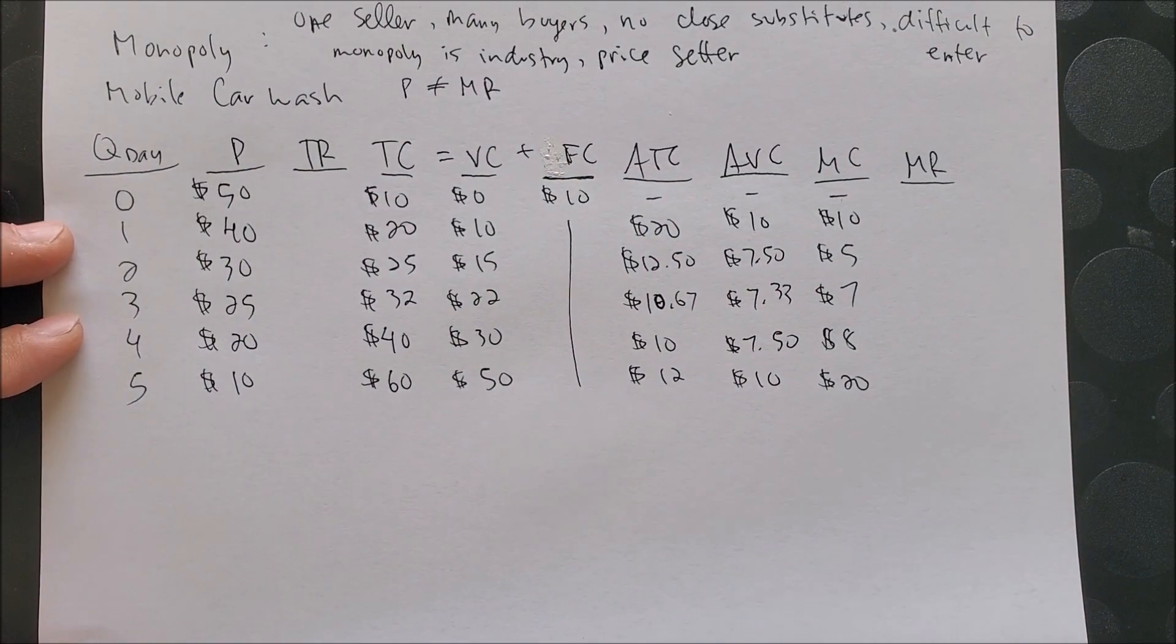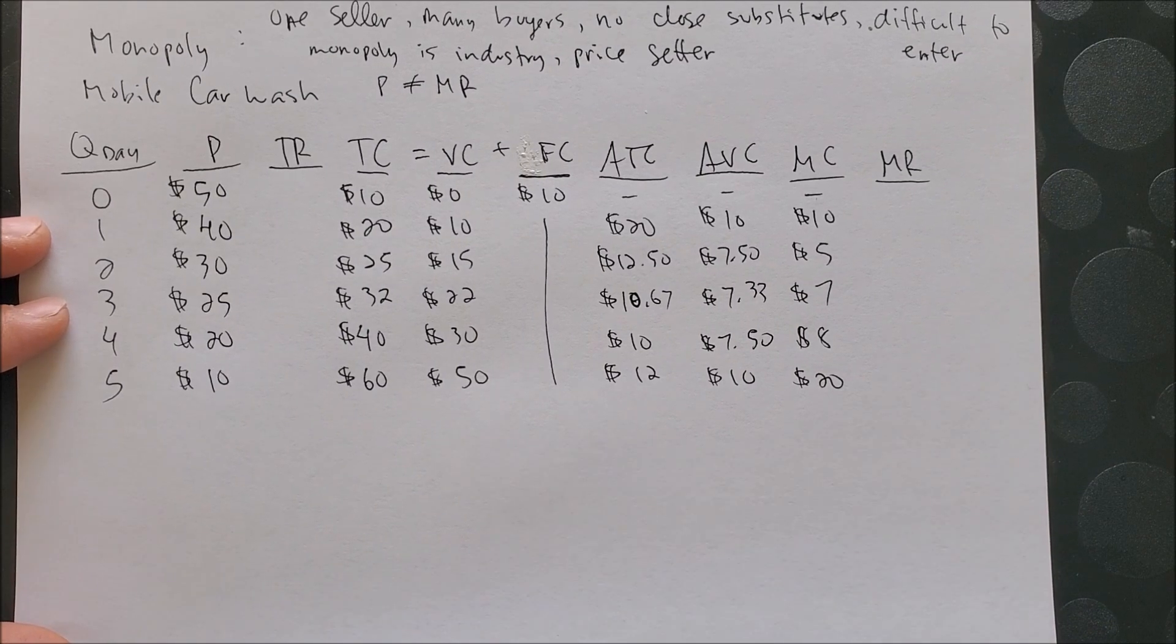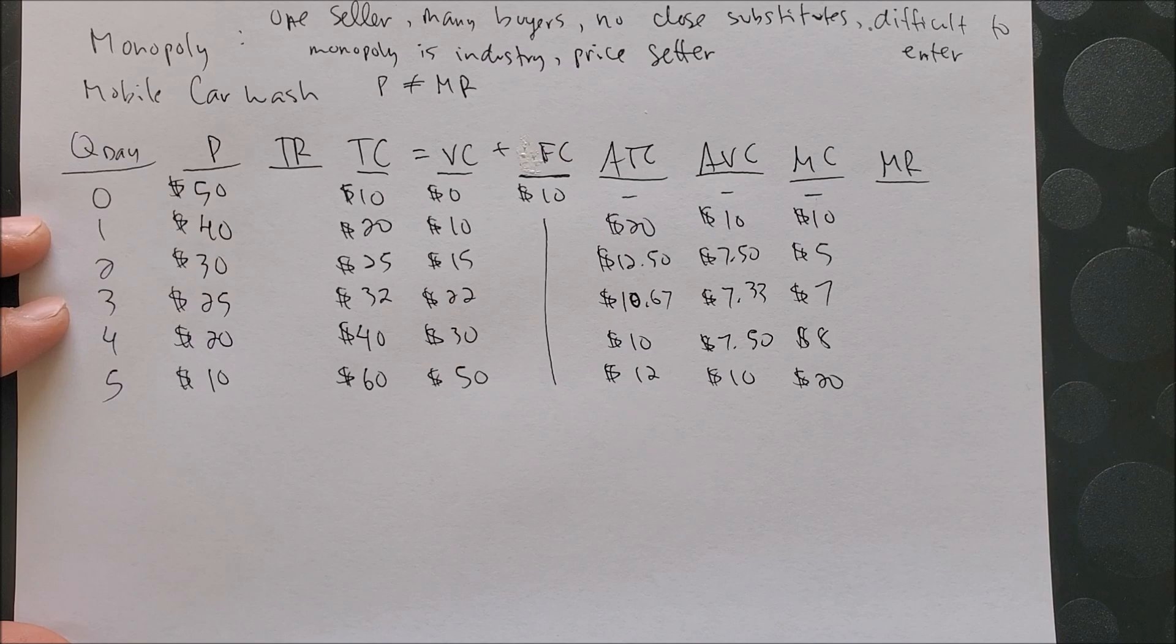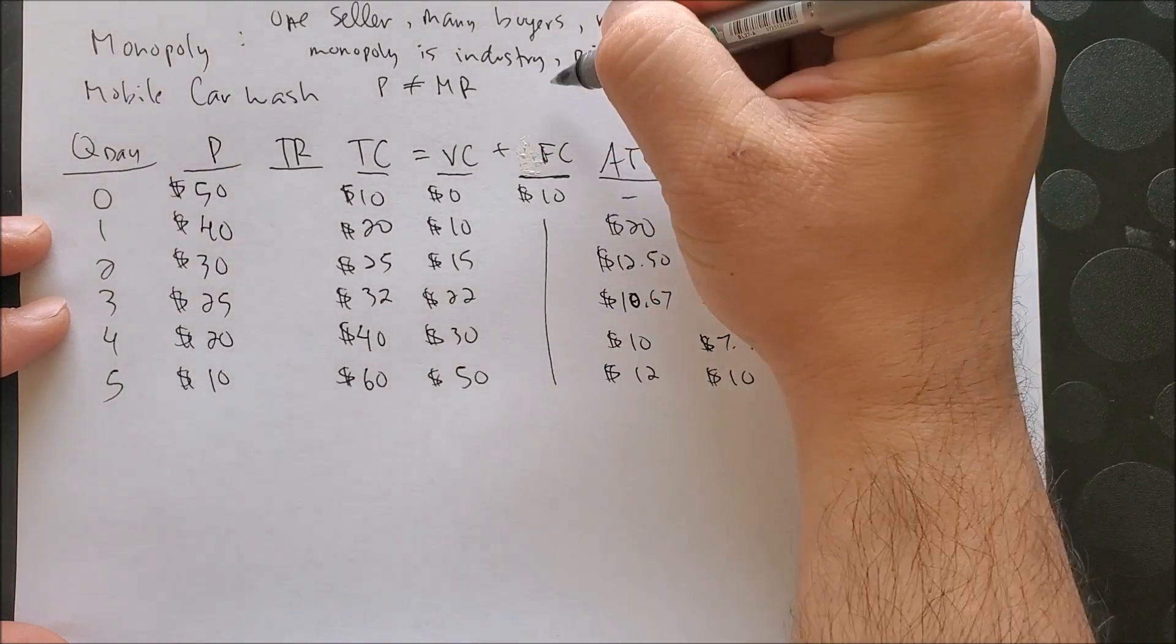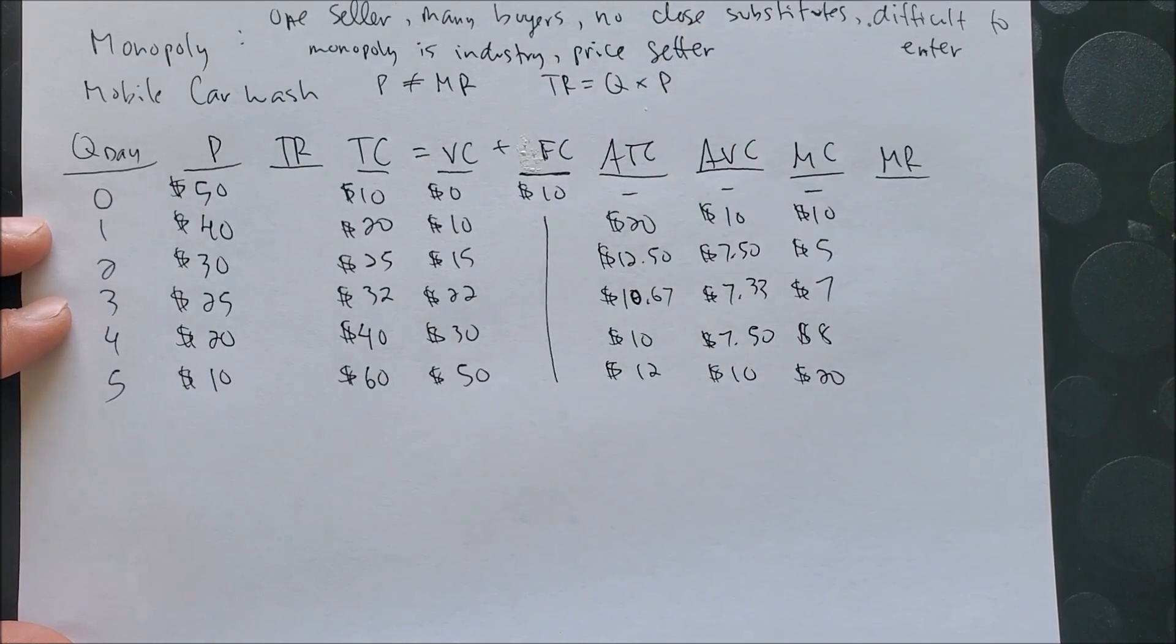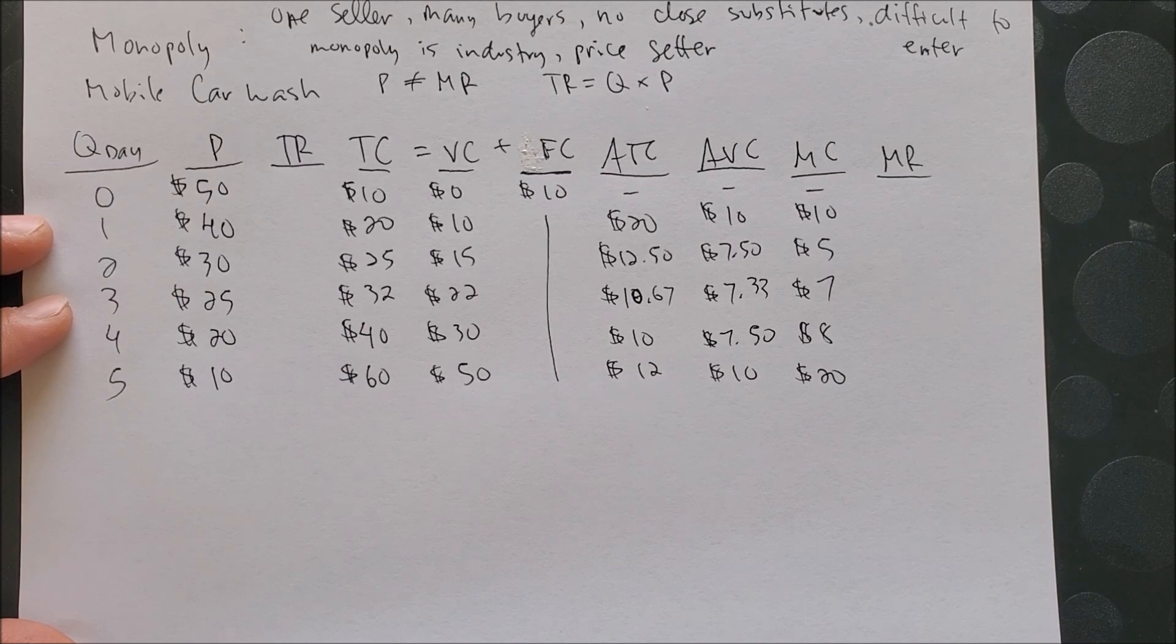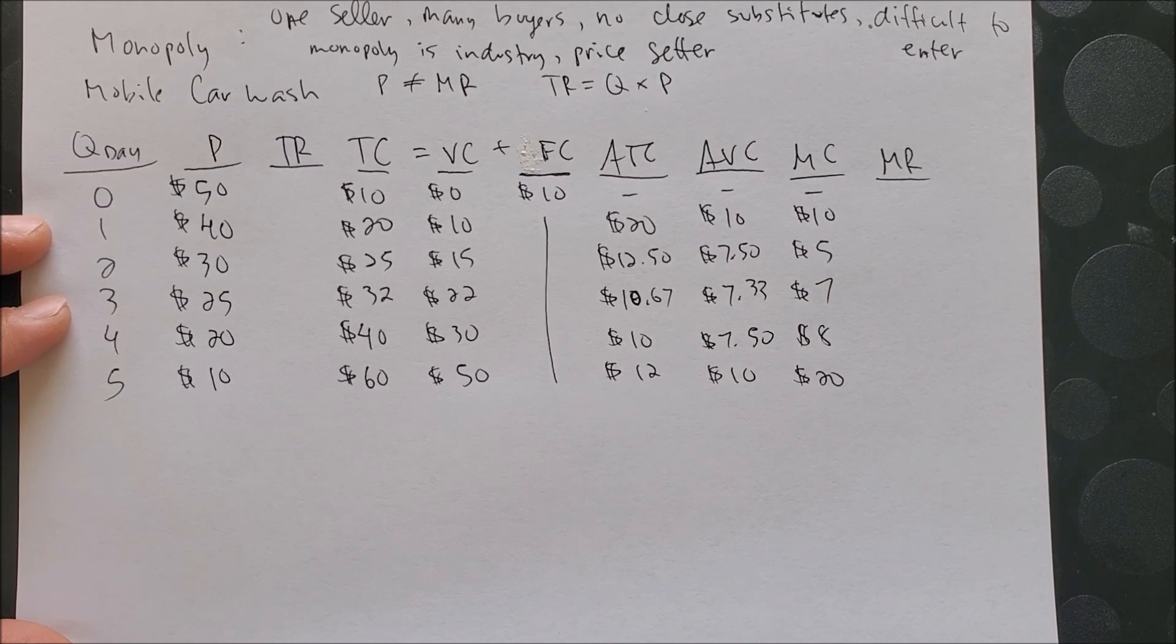So now that we have our numbers in price, we are able to find the total revenue. Once again, total revenue is a function of quantity times price. And since price is now given, we can go ahead and calculate total revenue and then calculate our marginal revenue.